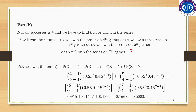The probability mass function of the Negative Binomial Distribution is: P(X=x) = C(x−1, k−1) × P^k × Q^(x−k), where x = k, k+1, k+2, and so on.